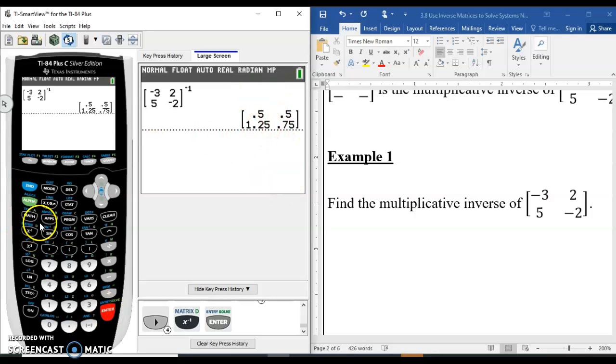And I do get that same matrix back. And again, if I wanted to put that as a fraction, I can simply convert all of those to fractions. So two different ways to find the multiplicative inverse of a matrix. You would only really need to do one, but sometimes some are more efficient than others.